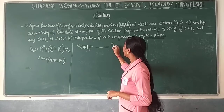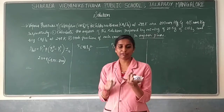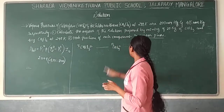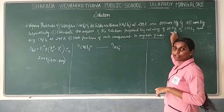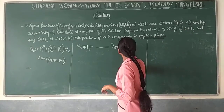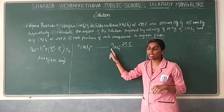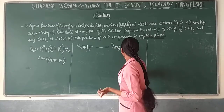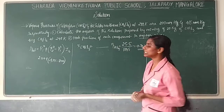First, find the number of moles of chloroform (CHCl3). Number of moles = mass divided by molar mass. The mass of chloroform given is 25.5 grams. The molar mass is: carbon 12, hydrogen 1, chlorine 35.5 times 3. Adding these gives 119.5 g/mol. So the number of moles of chloroform = 25.5 / 119.5 = 0.213 mol.